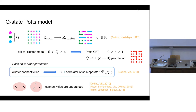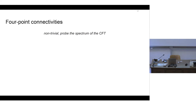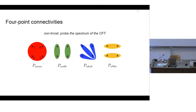In the past decades, many works have been done to study the two-point and three-point cluster connectivities, and these are pretty well understood. A much more non-trivial case is the four-point connectivities, since these observables actually probe the spectrum of the corresponding CFT. There are four different connectivities: considering four lattice points labeled one, two, three, four — the first is the probability of all four belonging to the same cluster (P_aaaa), the second is for one and two in the same cluster and three and four in a different cluster (P_aabb), and similarly we can define the other two.